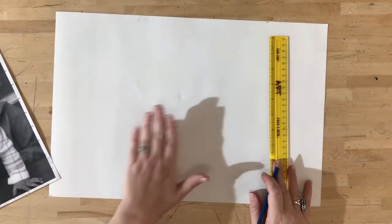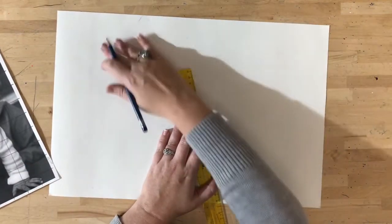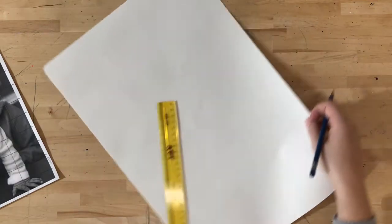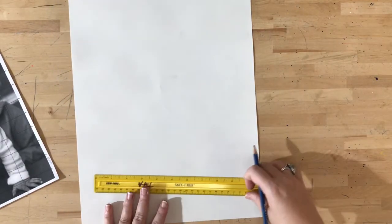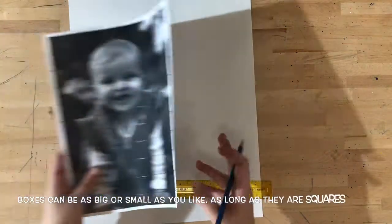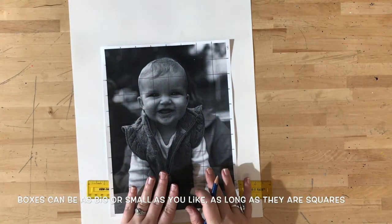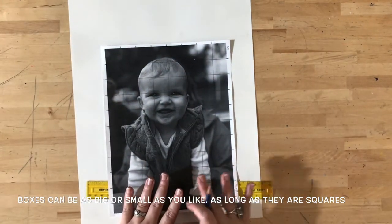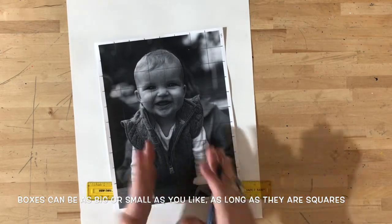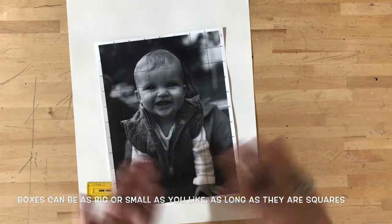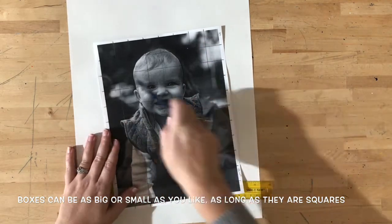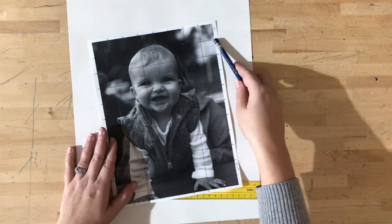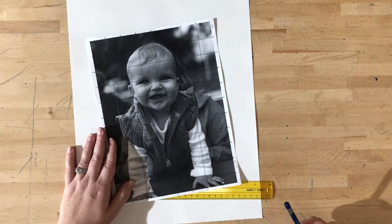Now I can set that aside and work on my large sheet of paper. Now as I do this, I am limited to the size of my paper, but I could make my boxes as big as I wanted. Say I was going to be taking this photo and turning it into a mural. I could do these boxes, you know, three feet by three feet. As long as they're all squares and I have eight of them going across and ten and a half of them going down.